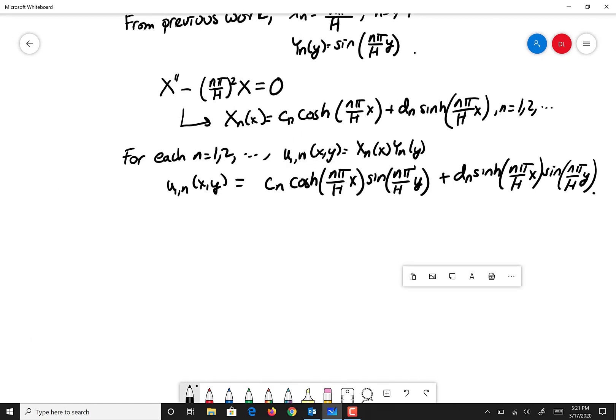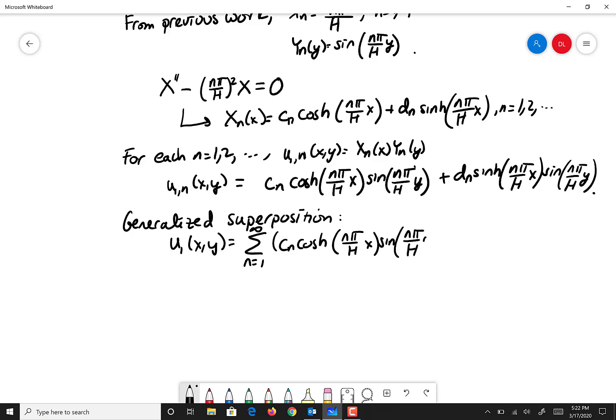So we're going to get c sub n cosh n pi over H x sine n pi over H y plus d sub n sinh n pi over H x sine n pi over H y. Generalized superposition. So now we do our generalized superposition, and we take the sum of all of those for all possible n's, and we get the summation n going from 1 to infinity of c sub n cosh n pi over H x sine n pi over H y plus d sub n sinh n pi over H y.